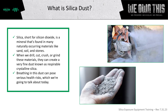Silica, short for silicon dioxide, is a mineral that's found in many naturally occurring materials like sand, soil, and stones. When we drill, cut, crush, or grind these materials, they can create a very fine dust known as respirable crystalline silica. Breathing in this dust can pose serious health risks that require special equipment to protect us, which we're going to talk about in this training.